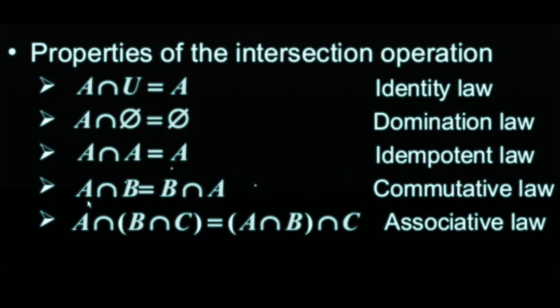Commutative law: A intersection B is equal to B intersection A. Only the places change.